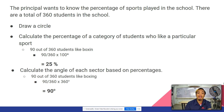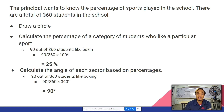Now we will calculate the angle of each sport so that we will know how to divide the circle for each sport. We calculate it with 90 over 360, which is the total number of students, times 360 degrees. The answer is 90 degrees.